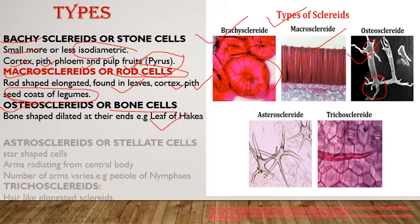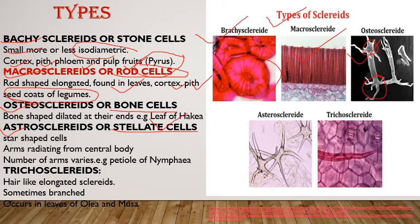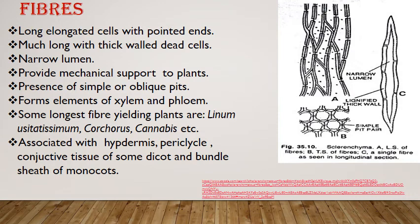Astrosclereids are star-shaped sclereids with arms radiating from the central region. The number of arms varies from plant to plant, and arms may be short or large. They are present, for example, in the petiole of Nymphaea. Trichosclereids are hair-like structures that help in providing mechanical strength.